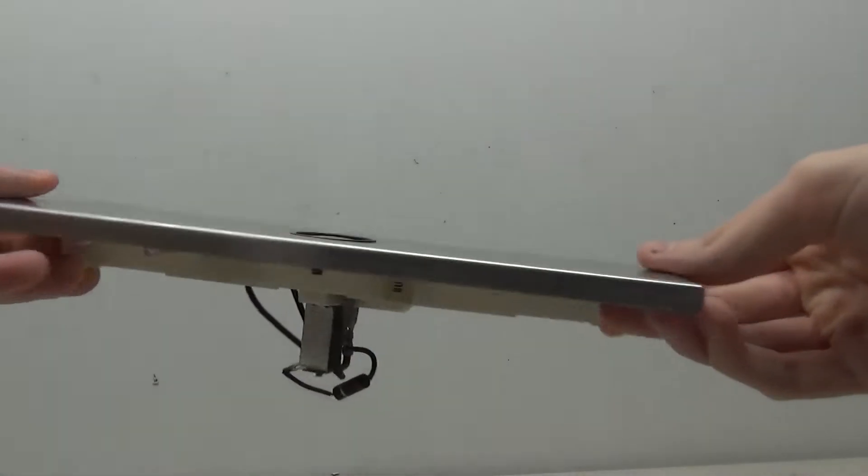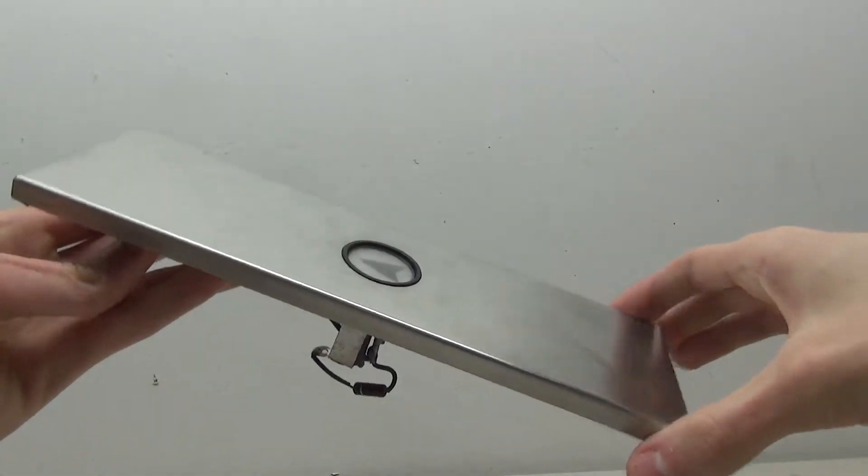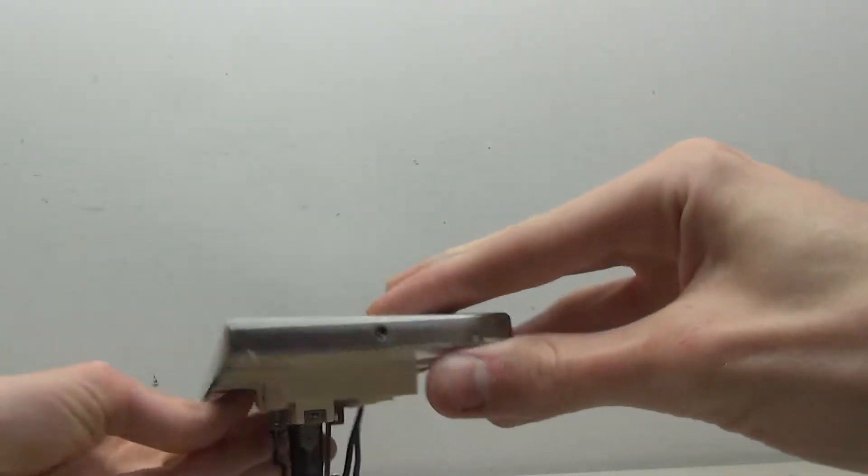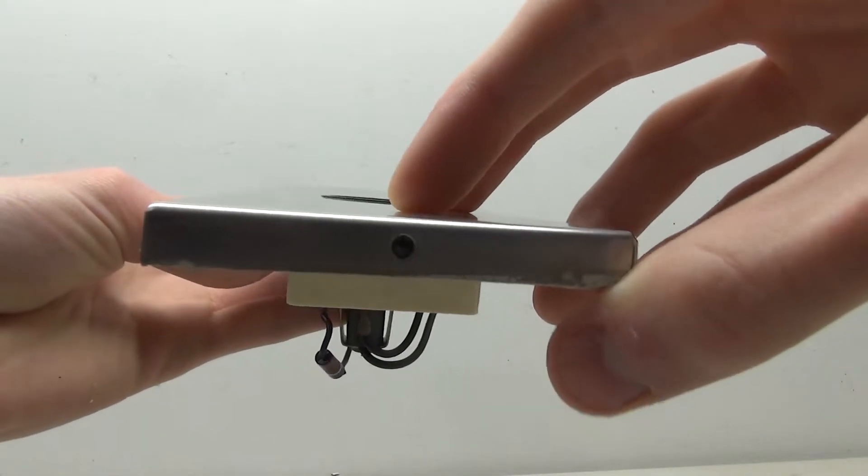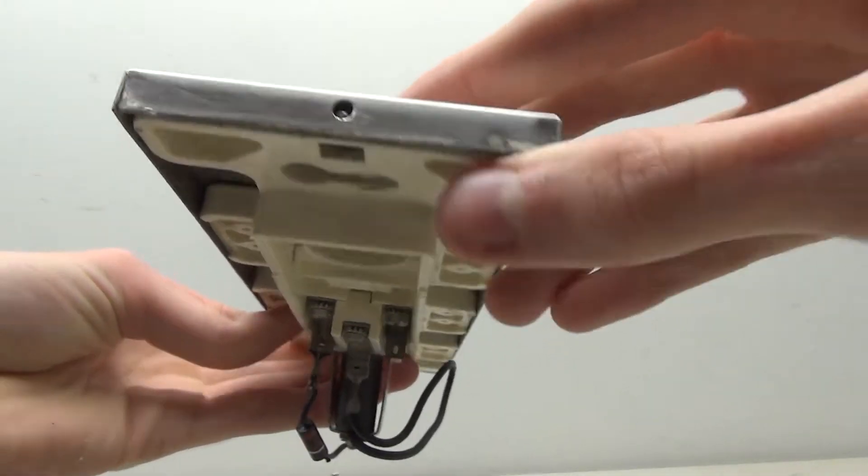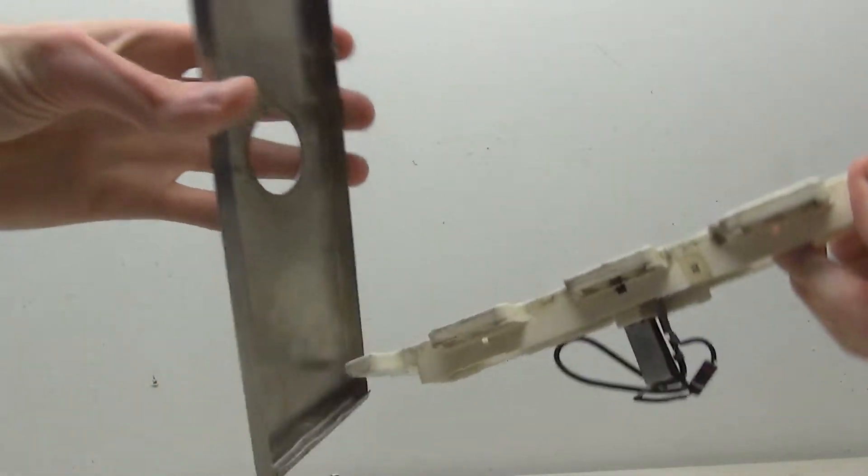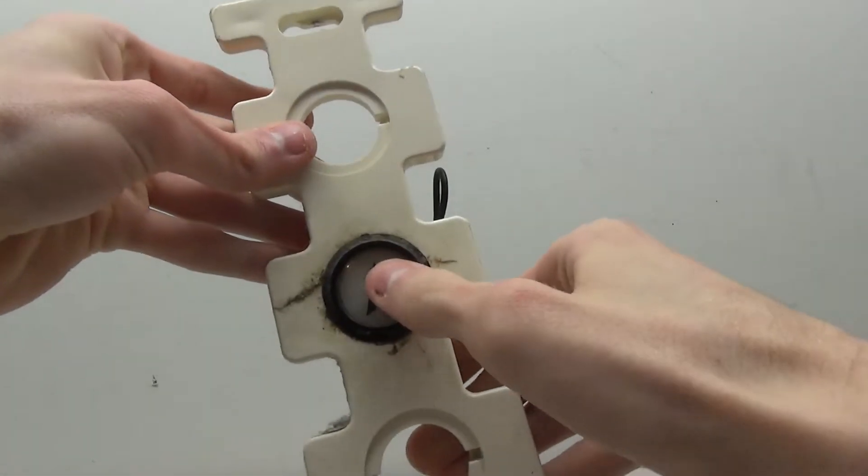This particular call button itself is pretty basic. It's just a normal call button. There's the button itself, and it consists of this plastic housing with a metal cover over the top. This metal cover can be removed by pressing in this little metal pin and lifting off, and that reveals the call button.